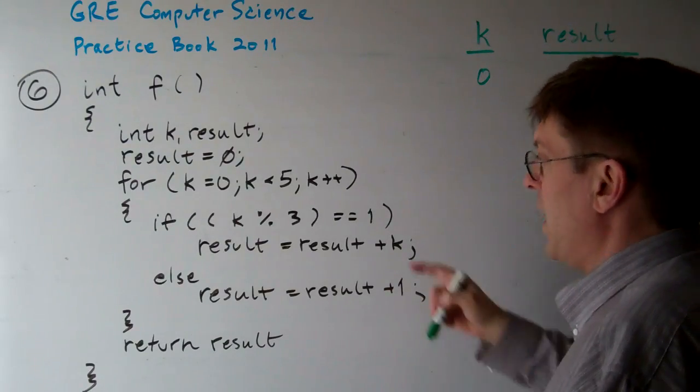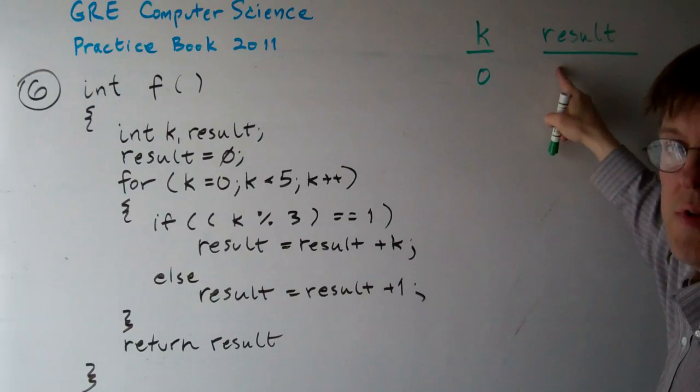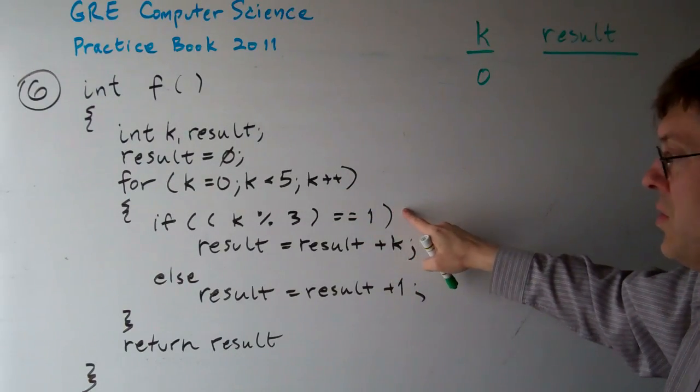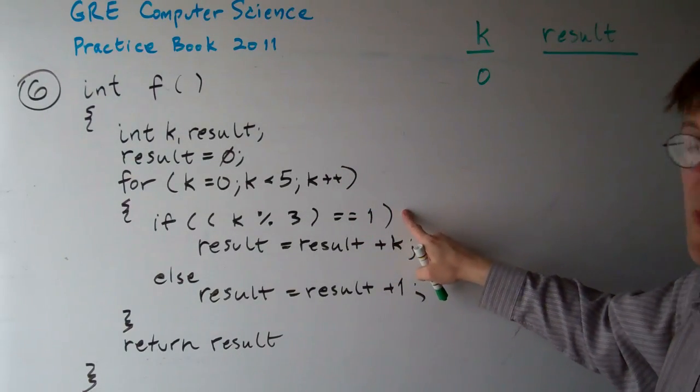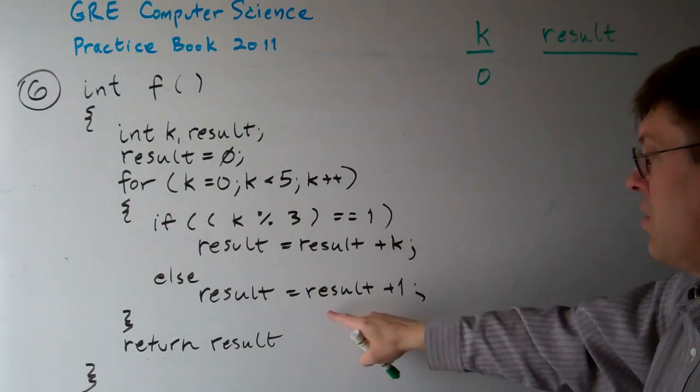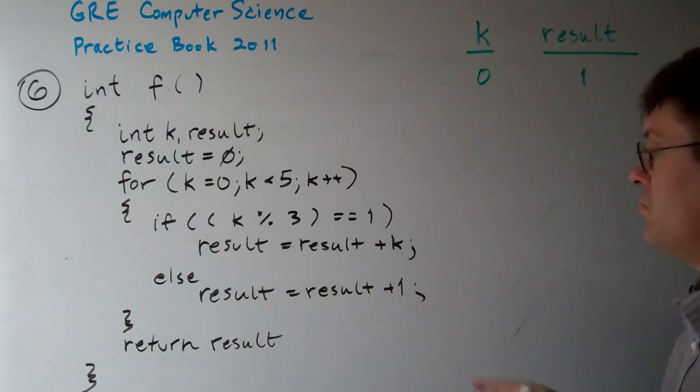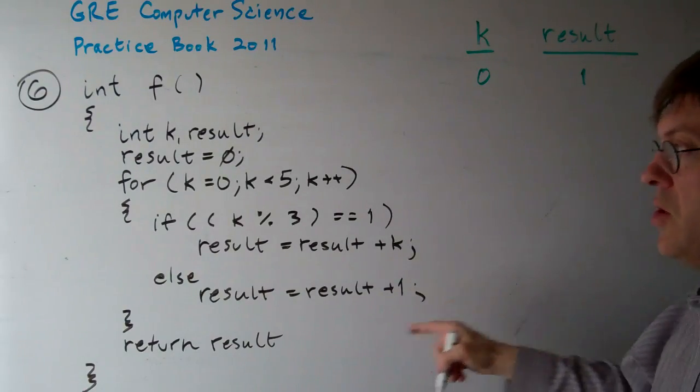And what happens is the result starts off at 0. But we're going to do this after it runs the loop. So it starts here. And we do k mod 3. k mod 3 is 0. So it does not equal 1. So the result gets result plus 1. And we loop.